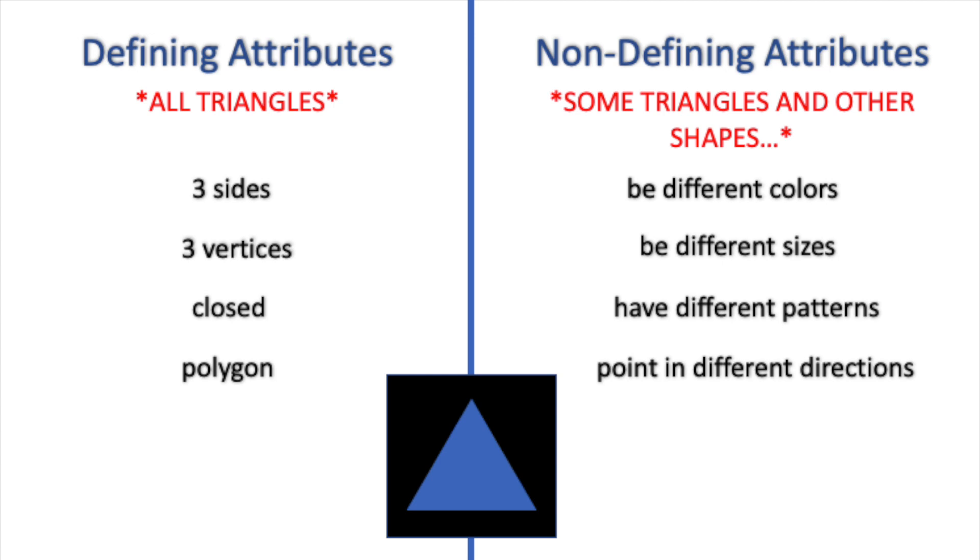And is every triangle going to be blue, big, a solid color, and pointing up? Not necessarily, because our non-defining attributes might be true for any shape. I could have a blue square, or a blue rectangle. We could also have a circle that is big, or a rectangle that has a polka dot pattern.